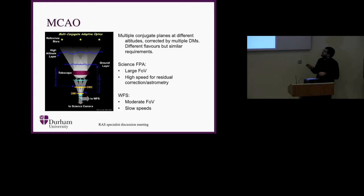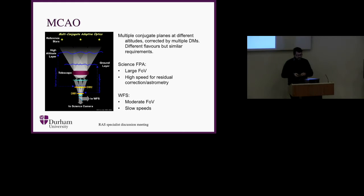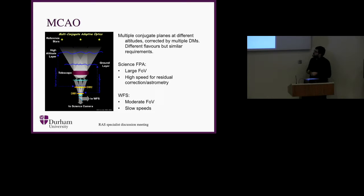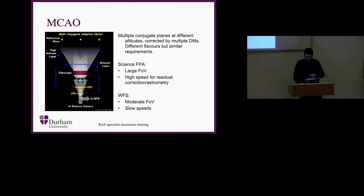MCAO is similar but uses multiple deformable mirrors conjugated to multiple planes, correcting the atmosphere at more than one altitude to give a larger field of view. In this case you need quite high speed for the residual correction in your science focal plane array — any residual tip-tilt can make use of a high-speed detector. For the wavefront sensor you have a moderate field of view and relatively slow speeds.